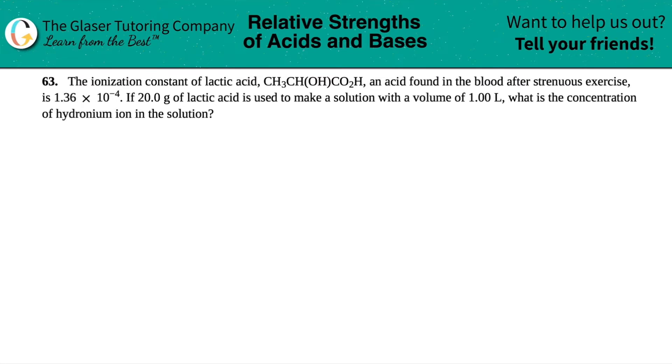Number 63, the ionization constant of lactic acid, which is CH3CHOHCO2H, an acid formed in the blood after strenuous exercise, is 1.36 times 10 to the negative fourth. If 20.0 grams of the lactic acid is used to make a solution with a volume of 1.00 liters, what is the concentration of hydronium ion in the solution?